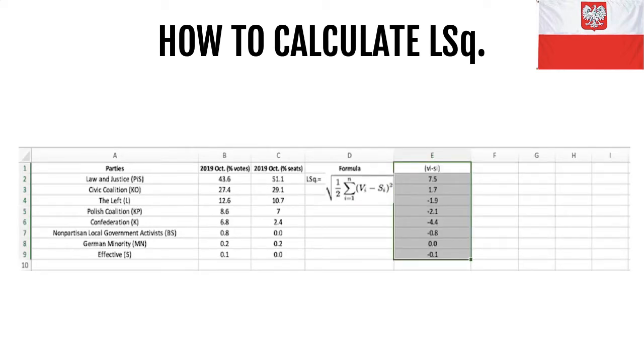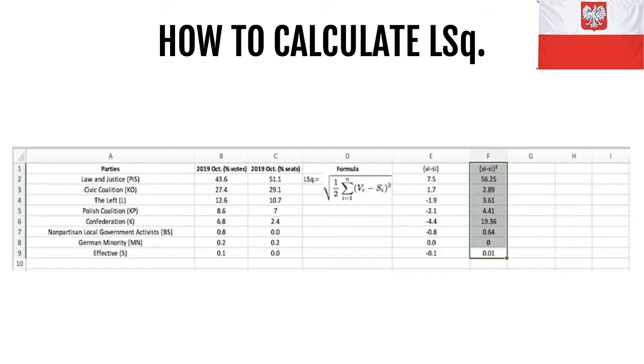The first thing, as I mentioned before, is to look at the difference between the percentage of votes and the percentage of seats. 51.1 minus 43.6 is 7.5, 29.1 minus 27.4 is 1.7, and so on. Then we need to square the difference.